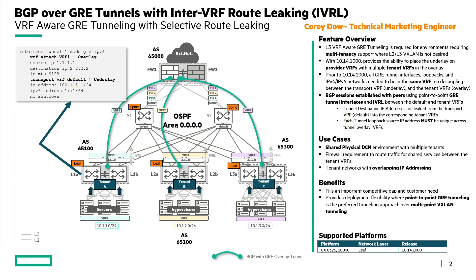The primary use case is a shared physical data center where multiple tenants occupy the same space. Additionally, VXLAN tunneling is newer than GRE, and in some cases the firewall may not support VXLAN, so GRE may be the only option for deployment. VRFs also support the use case where tenant VRFs have overlapping IP addresses. As a benefit, this fills a competitive gap for environments where VXLAN is not the primary option — it can be simpler to deploy than VXLAN with less configuration, and may provide better multi-vendor interoperability given that GRE tunneling is widely used in the industry.